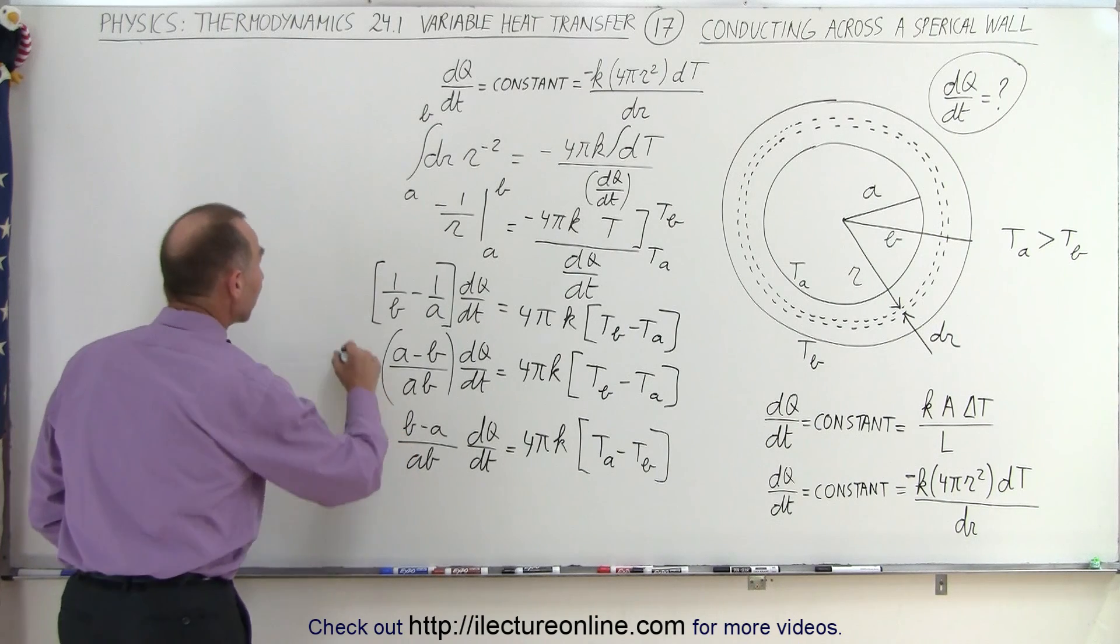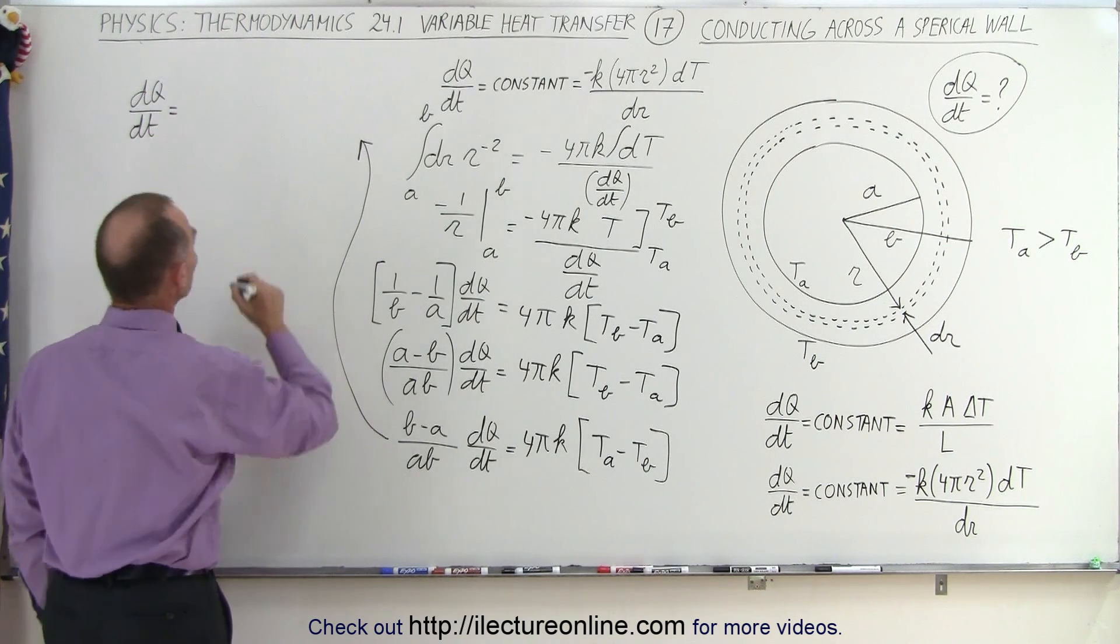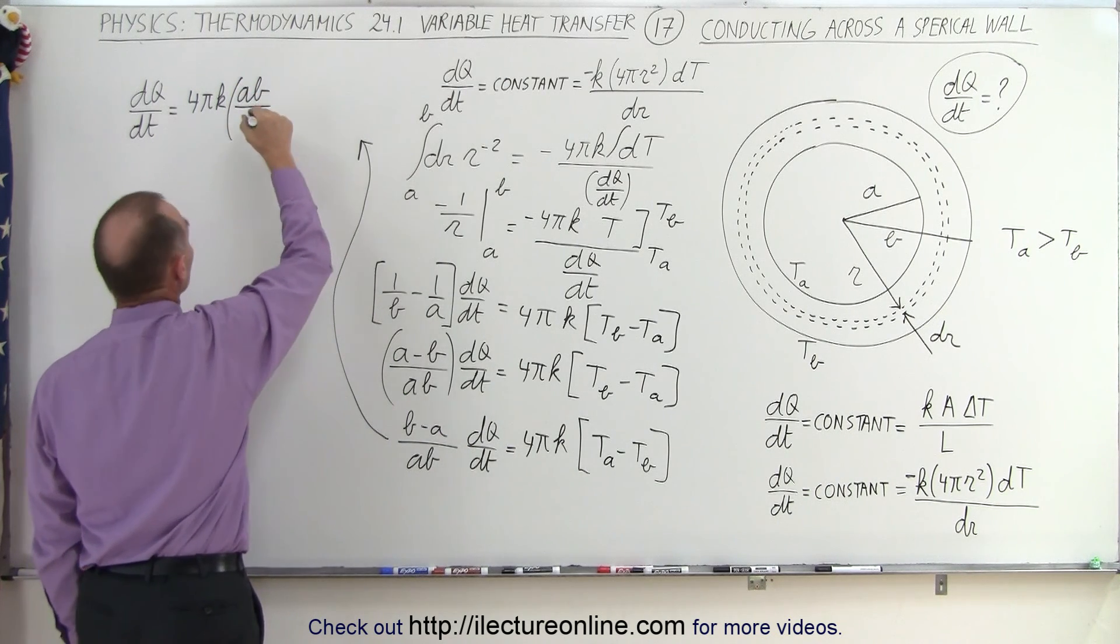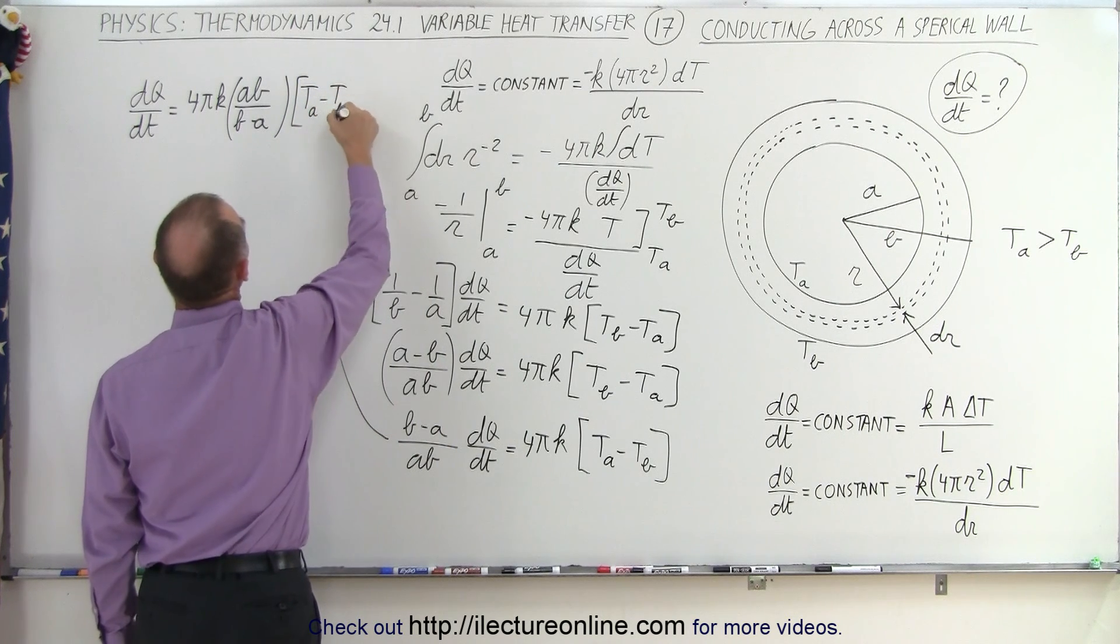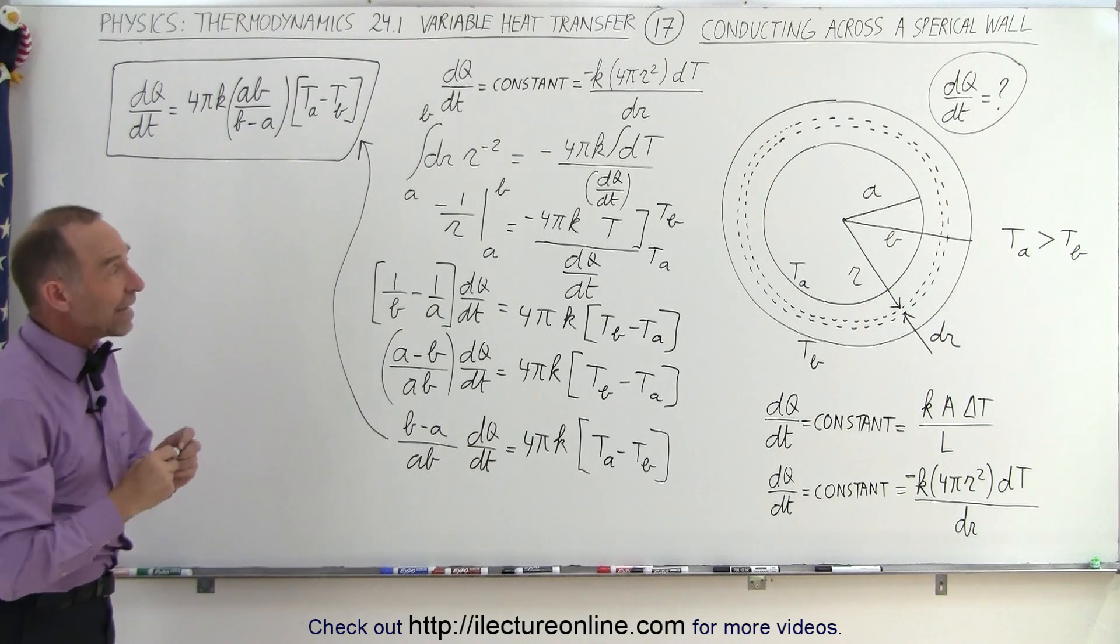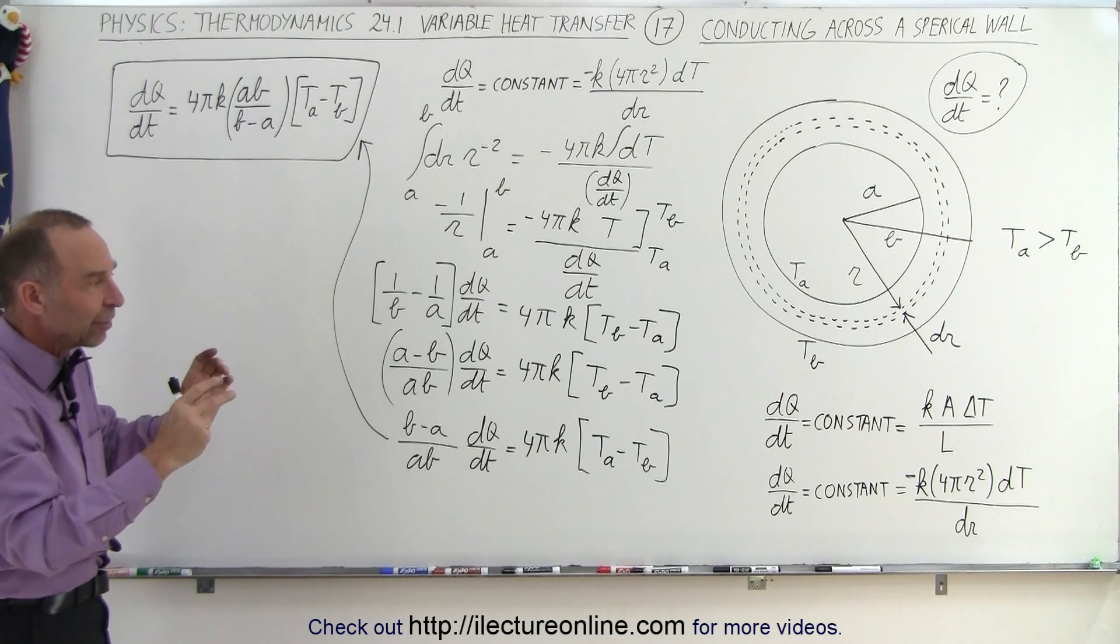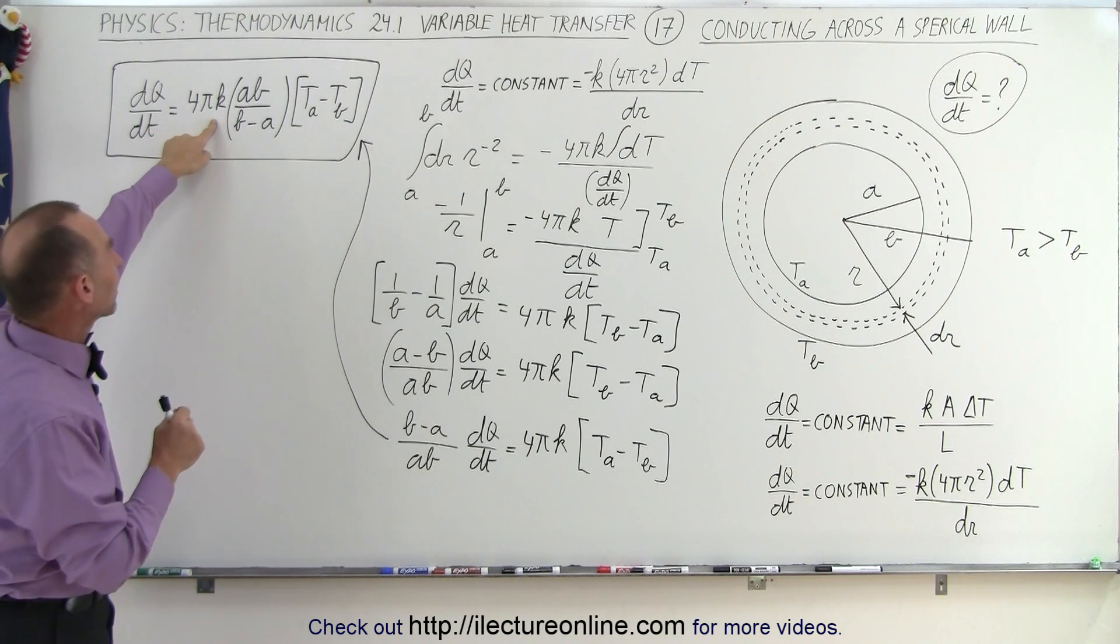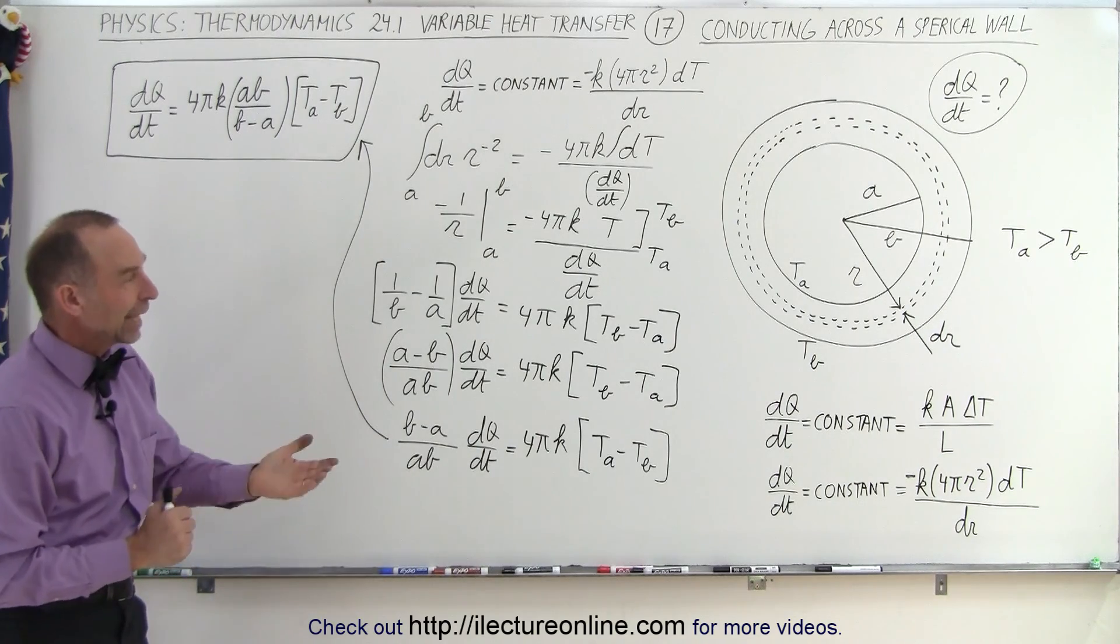Finally, I can solve this for dQ/dt. So we can write that dQ/dt, the amount of heat per unit time being transferred across that shell, is going to be equal to 4πK times AB over B minus A times the quantity TA minus TB. And now we have an equation that describes the heat flow across a shell. Remember that the shell gets larger in cross-sectional area, so it's not a constant path. It's a path that gets wider, so to speak. So this will then be the equation we need to calculate the amount of heat transferring per unit time, which is a constant: 4π times the heat conductivity K, AB over B minus A, times TA minus TB, which is the difference in the temperature between the inside and the outside. And that's how it's done.